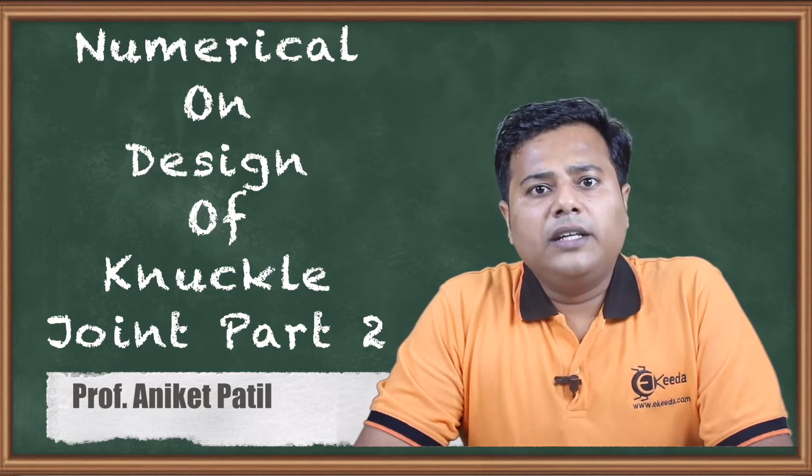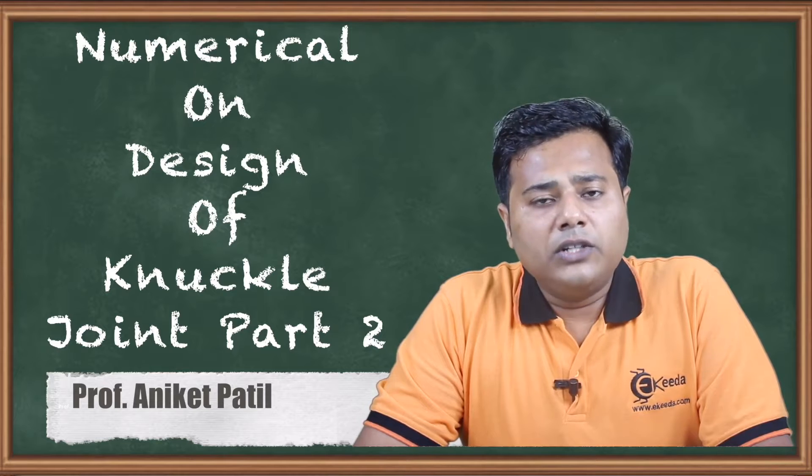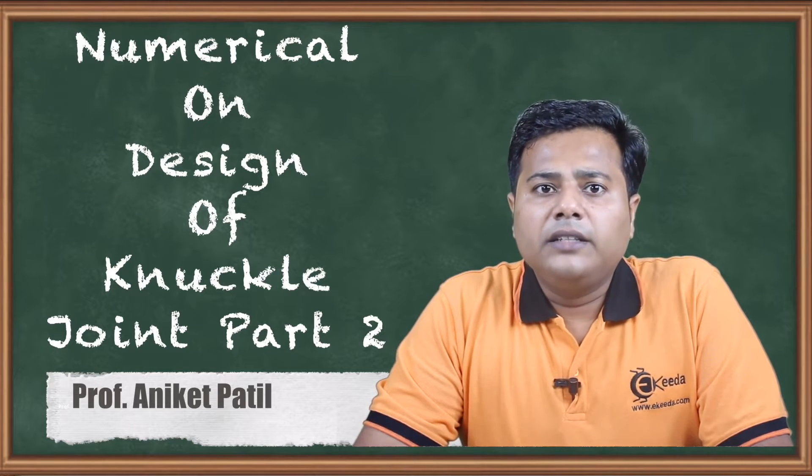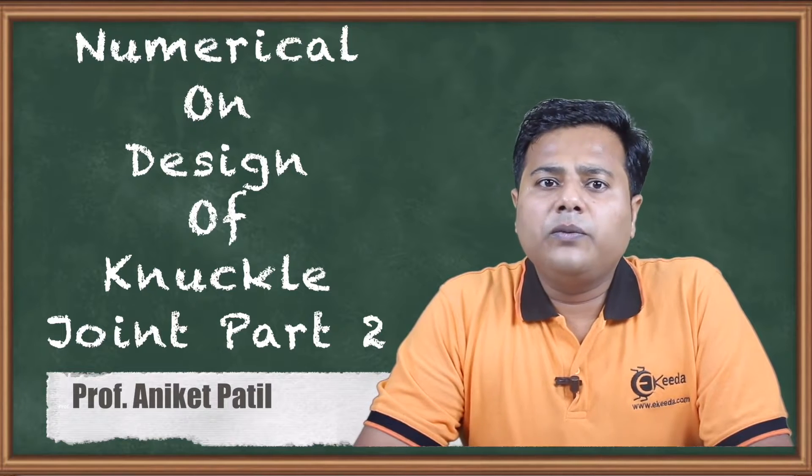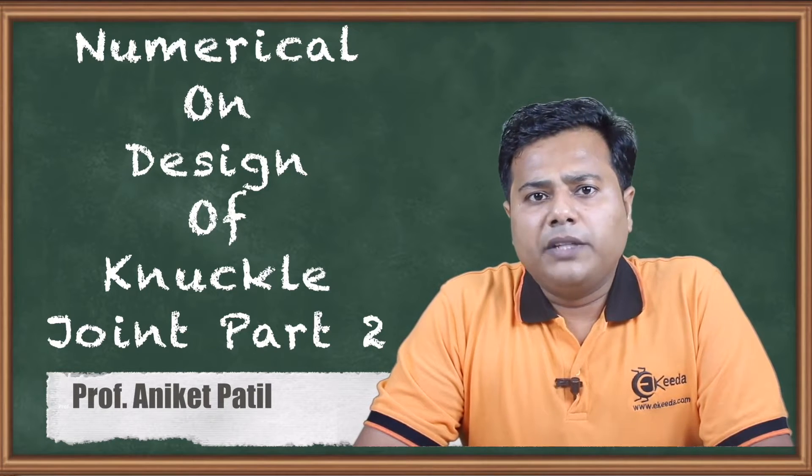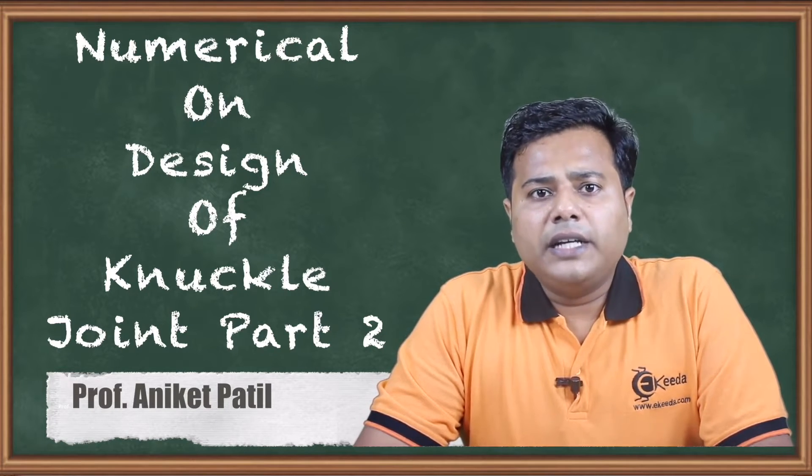We know that there are three basic parts of knuckle joint: one is the eye end, then the double fork end, and then the pin. So far we have finished with the design of pin. So let us start with the design of eye end.